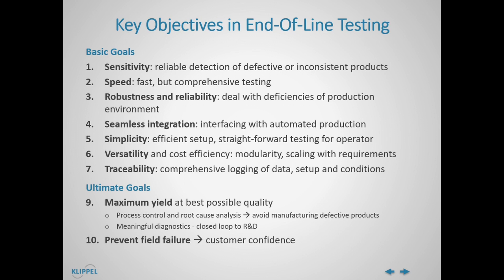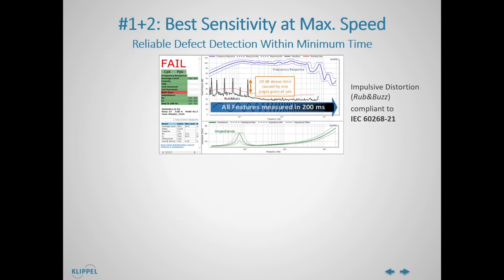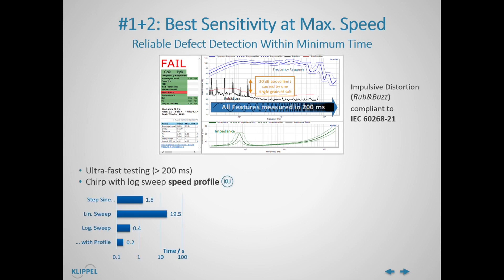Now let us focus on some of the mentioned goals and see how the Clipple QC addresses these requirements. How can we reliably detect defects within the shortest possible amount of time? In this measurement, the complete acoustical response, including frequency response, harmonic distortion and rub and buzz, as well as impedance, were tested with as little as 200 milliseconds, covering the full audio band. How is this possible? A locked chirp signal is the optimum test signal for audio quality control due to its continuous excitation and the perfect separation of all abnormal distortion and noise.